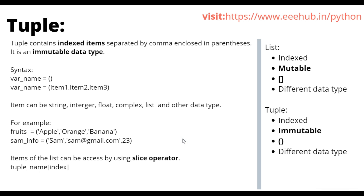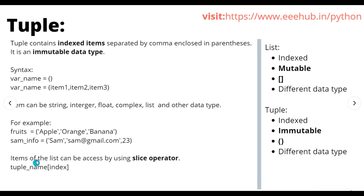Now we will learn how to access data from the tuple. Just as with the list data type, we can access data using the slice operator. You write the tuple name followed by open and close square brackets, and inside the square brackets you put the index of the item you want to fetch. For example, to access apple from the fruit tuple, you write fruit[0], and that will return apple.